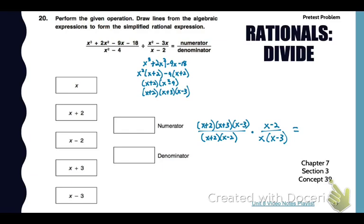Now I can divide out any term in the numerator with any term in the denominator. My (x + 2)s divide out, my (x + 3)s divide out, and my (x - 2)s. So I'm left with (x + 3) over x. Then I'll just match those for my numerator and my denominator.